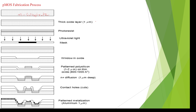In the second step, the total surface is grown with a silicon dioxide layer to give protection for the surface. This process is also called the oxidation process.